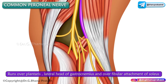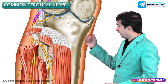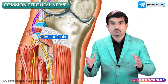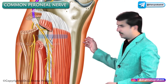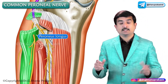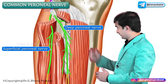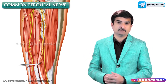It then runs over the plantaris, the lateral head of the gastrocnemius, and over the fibular attachment of the soleus muscle. By the time it reaches the lateral aspect of the fibula, it winds around the lateral aspect of the neck of the fibula to reach deep to the peroneus longus muscle, where it divides into the deep and superficial peroneal nerves.